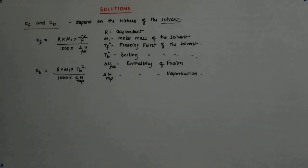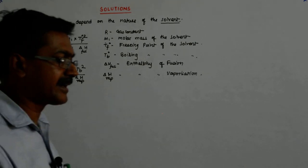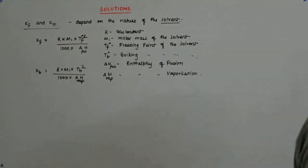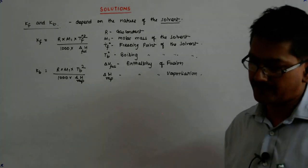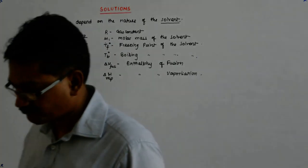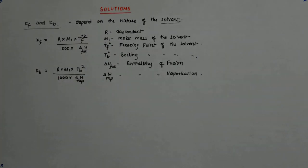So this is how you get your ebullioscopic constant or cryoscopic constant, right? KB and KF. Fine? That's clear?